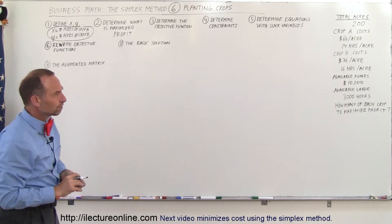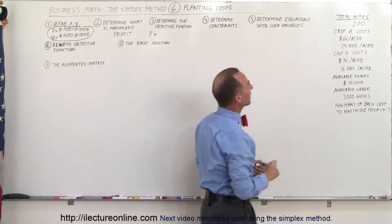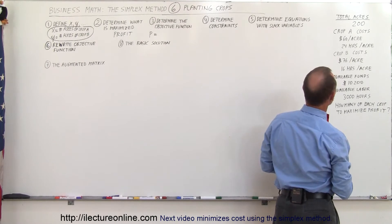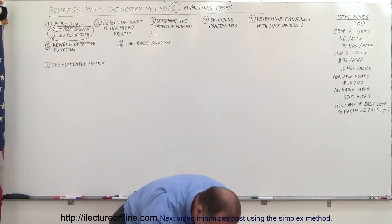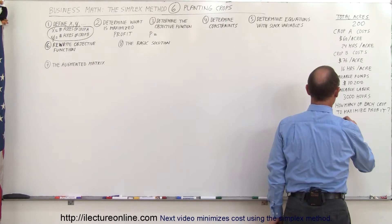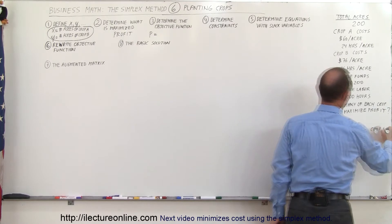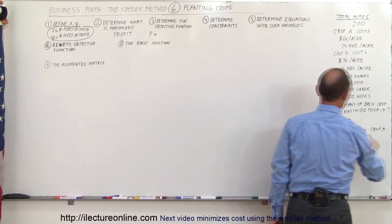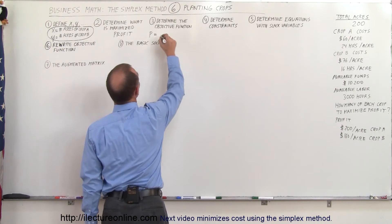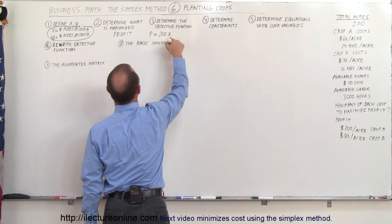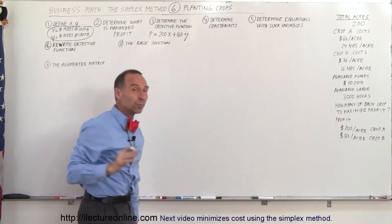We're trying to determine the objective function. We make a profit of $200 per acre for crop A and $160 per acre for crop B. So our objective function looks as follows: Profit equals $200 per acre for crop A, represented by variable x, plus $160 per acre for crop B, represented by variable y. That's how much profit we're going to make.